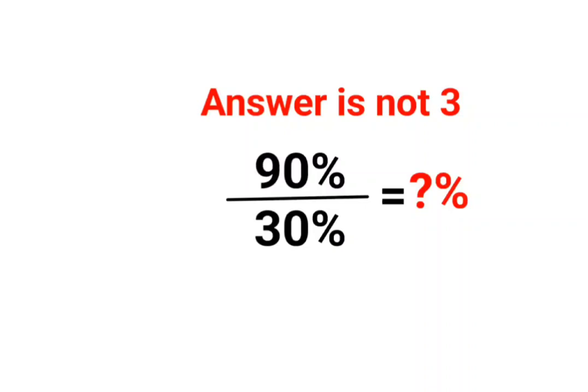Welcome everyone. So yes, a lot of people thought that 90% when divided by 30%, the answer should be 3. Actually, it's not completely wrong. Okay, so let's just do this.